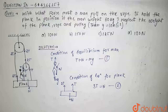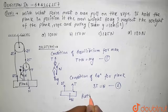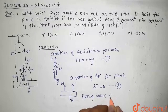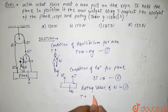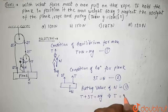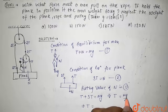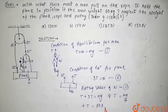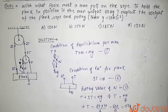Putting the value of normal from the second equation into the first equation: T + 3T = mg, so 4T = mg. Therefore T = mg/4. Here m is the mass of the man, which is 60 kg, and g = 10. So T = 60 × 10 / 4 = 600 / 4 = 150 Newton.